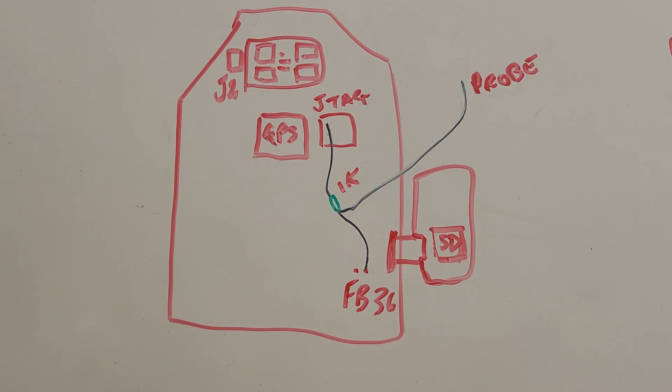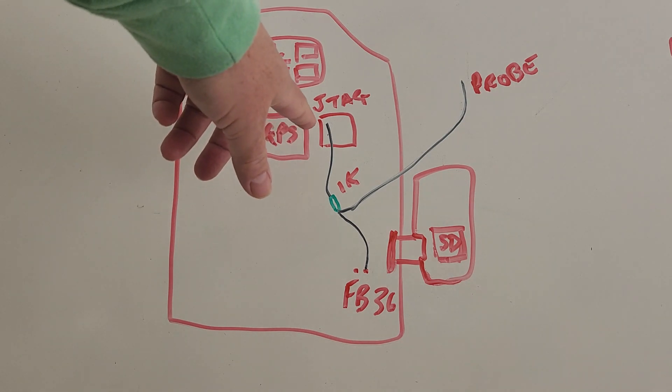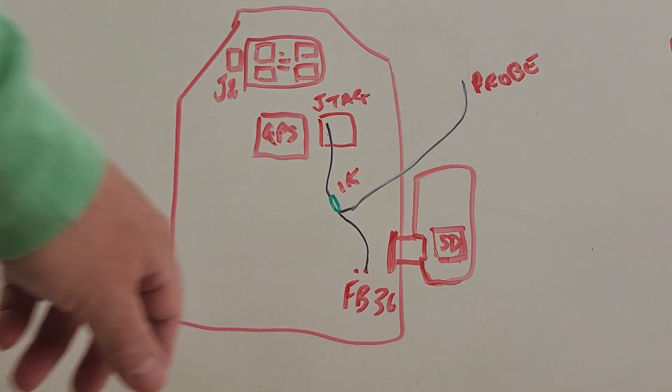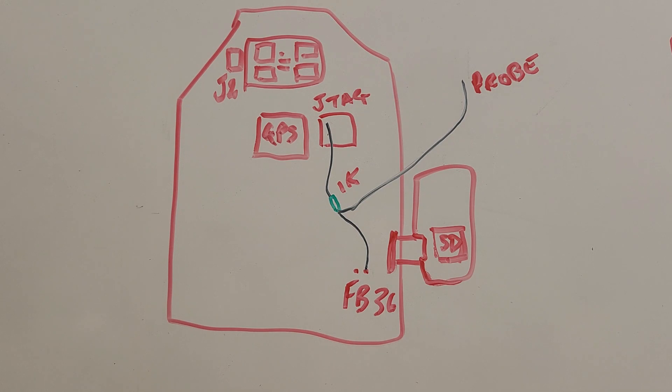What we've found is that it appears that under certain circumstances that 3.3 volts that you're pulling either from the JTAG pin 1 or the left-hand pin on the FB36, rather than being at 3.3 volts, there seems to be a significant voltage drop. And it's been seen to be as low as 1.7 volts, which obviously means that SD won't boot correctly.